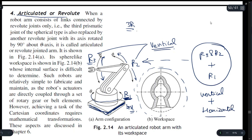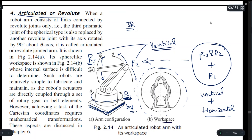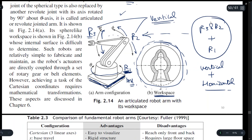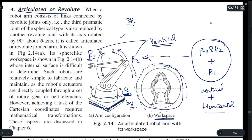By combining all three revolute joints, the workspace that you will get will look like the shape of the manipulator arm viewed from the top. This is the shape of the workspace for the articulated coordinate system.